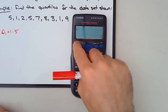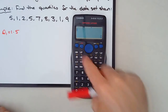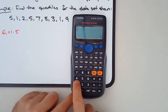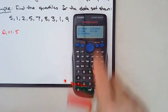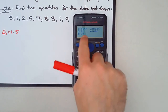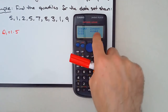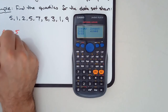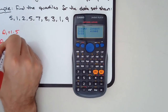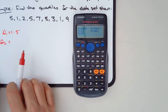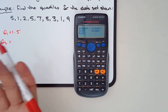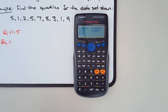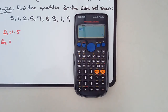Next, let's work out the median. So I pressed AC, Shift, 1. Rather than writing the word median, I could write Q2 — Q2 just means the same thing as the median. Press number 4, median — 5. No surprises there.